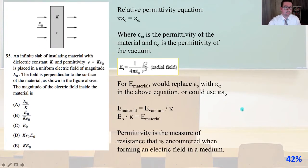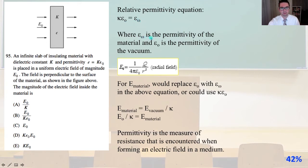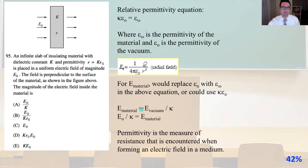Problem 95: an infinite slab of insulating material with dielectric constant K and permittivity ε equals Kε₀ is placed in a uniform electric field of magnitude E₀ perpendicular to the surface. The relative permittivity equation is Kε₀ equals ε_W, the permittivity of the material. For the electric field inside the material, we replace ε₀ with ε_W or Kε₀, so E_material equals E_vacuum over K, giving E₀ over K. That is answer A.